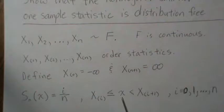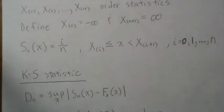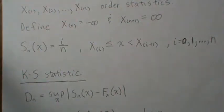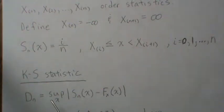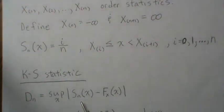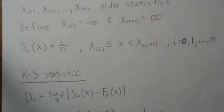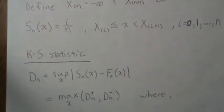The standard empirical CDF is I over n, where I represents the order statistics — basically how many observations are less than or equal to X. That's our empirical distribution. The KS statistic D_n is defined as the supremum of the absolute difference between the hypothesized CDF and the empirical CDF. The supremum is the least upper bound — the smallest value larger than all the differences. Intuitively, if this difference is too big, the data probably did not come from that distribution.